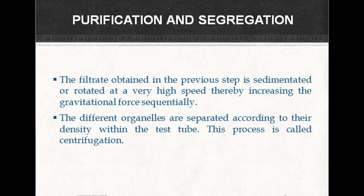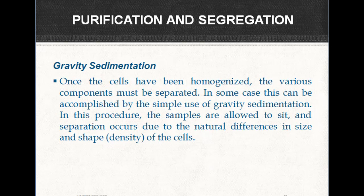Once the cells have been homogenized, the various components must be separated. In some cases this can be accomplished by the simple use of gravity sedimentation. In this procedure, samples are allowed to sit and separation occurs due to the natural difference in size and shape of the cells.